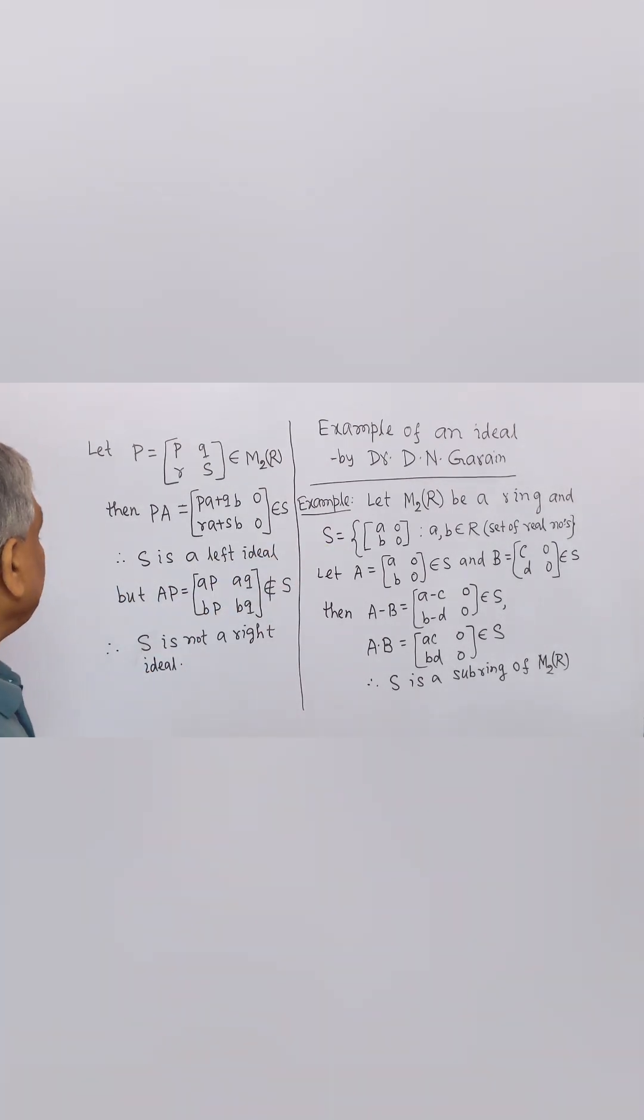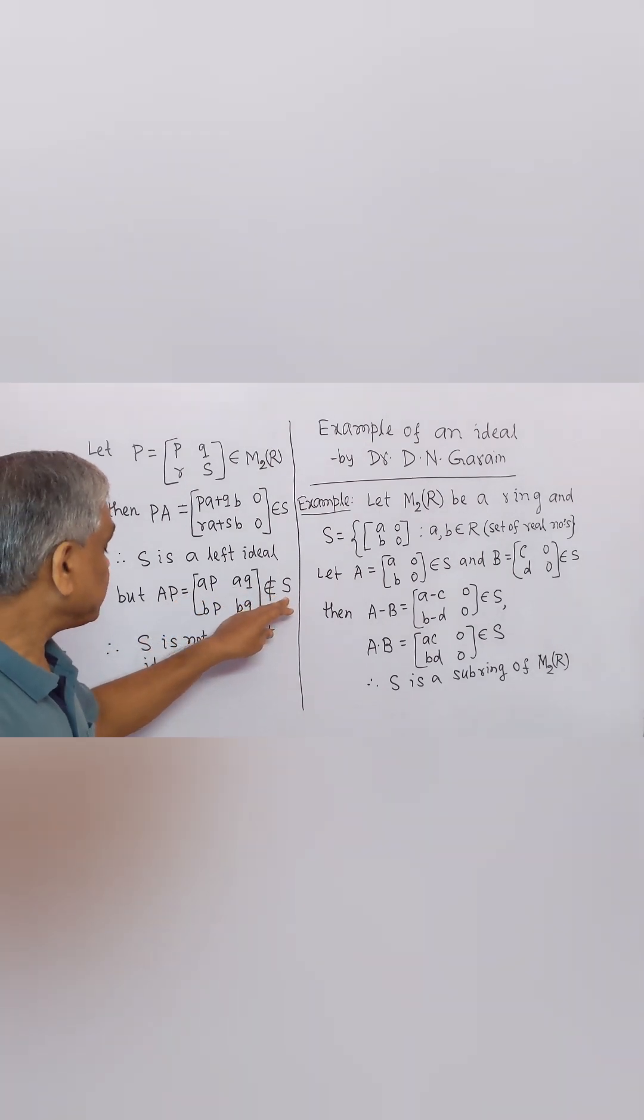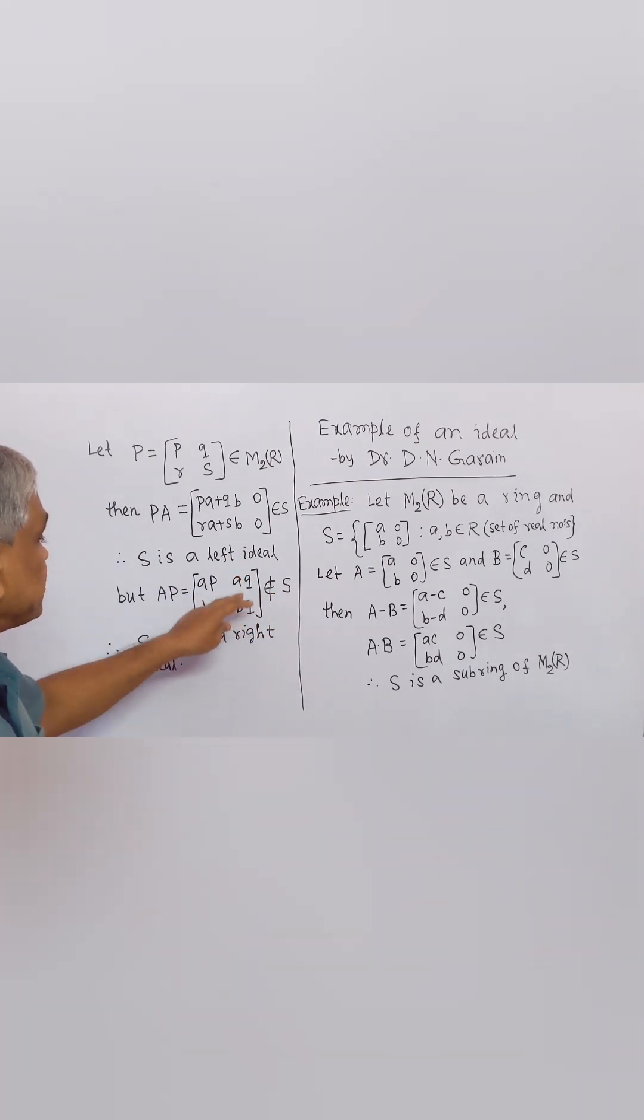But AP does not belong to S because second column does not contain 0 entries. Therefore, S is not a right ideal.